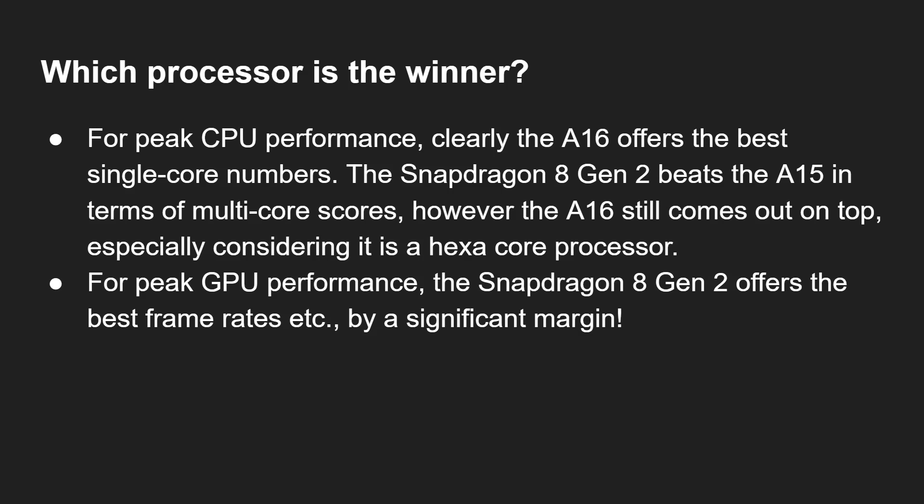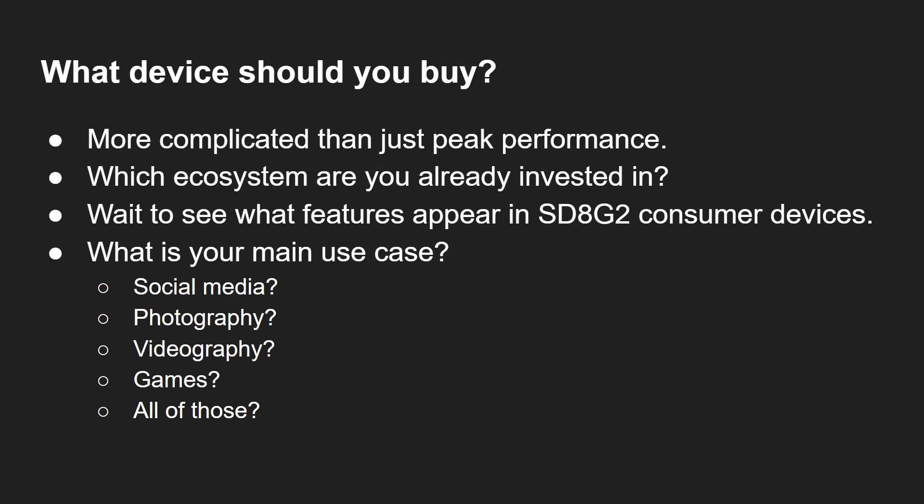So which processor wins? For peak CPU single-core, the A16 clearly offers the best performance. The Snapdragon 8 Gen 2 beats the A15 in multi-core, but the A16 still comes out on top — especially impressive given it's a hexa-core. For peak GPU performance, the Snapdragon 8 Gen 2 leads by a significant 37% margin.